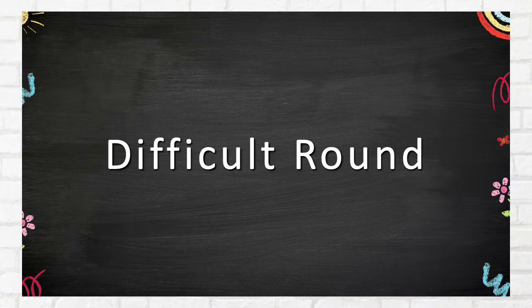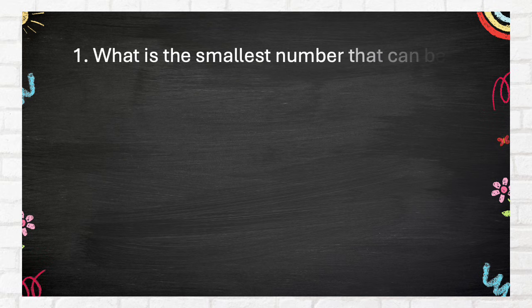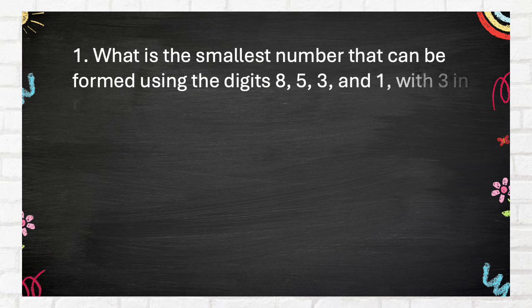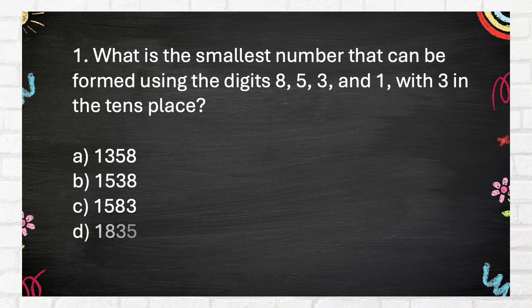Difficult Round. Question number 1: What is the smallest number that can be formed using the digits 8, 5, 3, and 1 with 3 in the tens place?